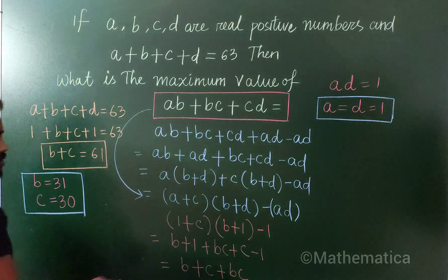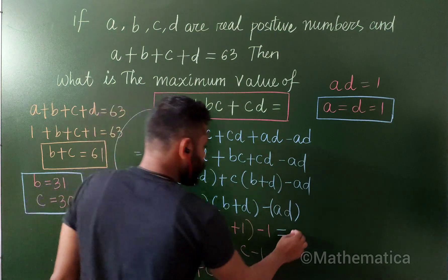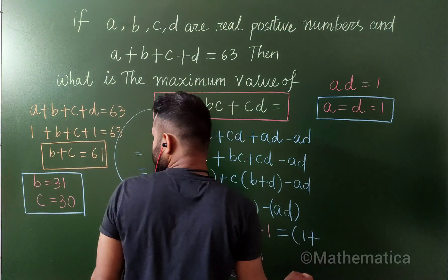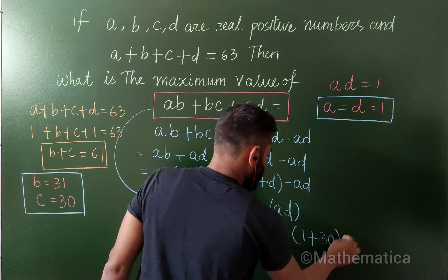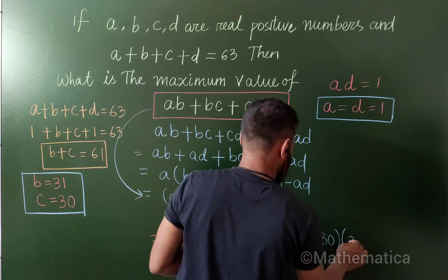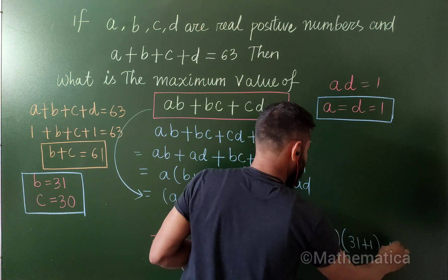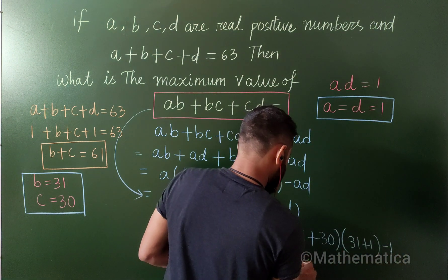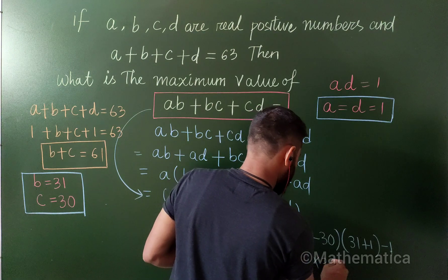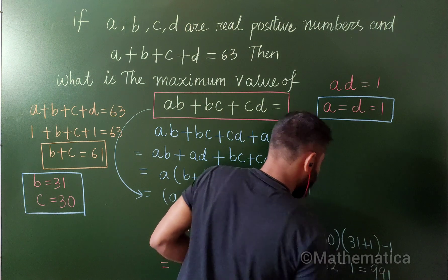So if we use this one here, one plus c is 31, plus c is 30, then b is 31 plus one minus one, and this is equal to 31 into 32 minus one, which is 991.